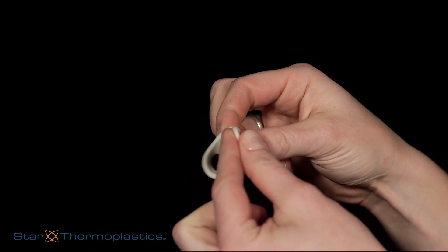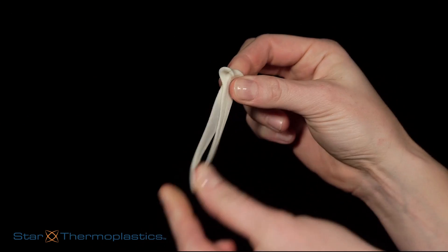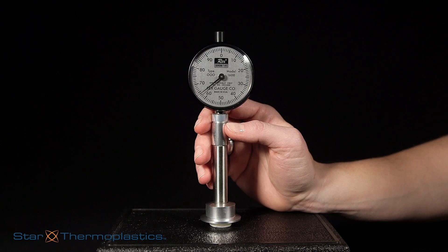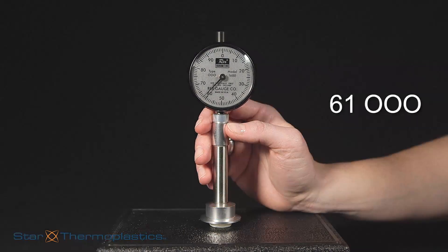Chewing gum, whether minty or fruity, gets softer the more it's chewed. But as the flavor decreases, so does its elasticity. The durometer of the chewing gum is a 61 triple-aught.